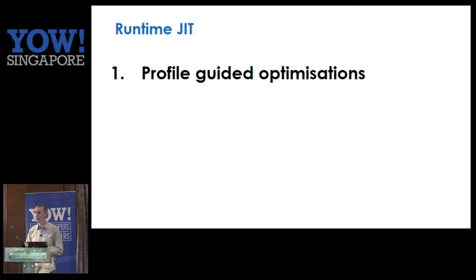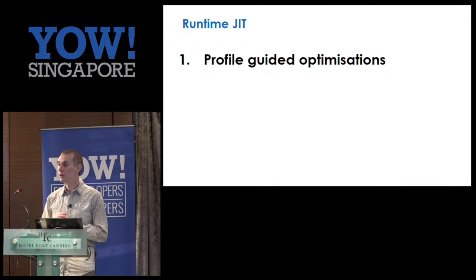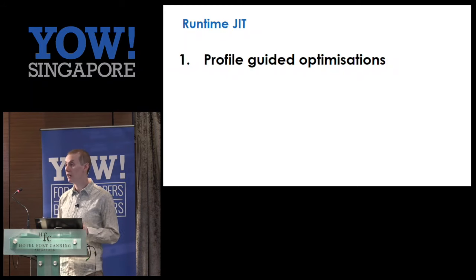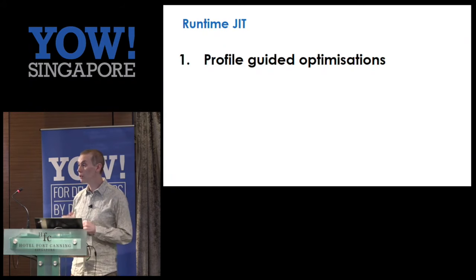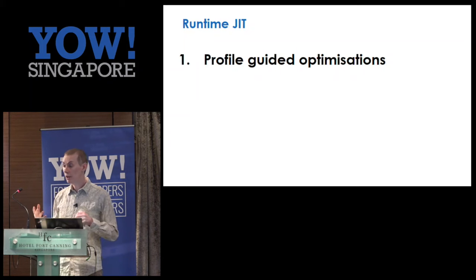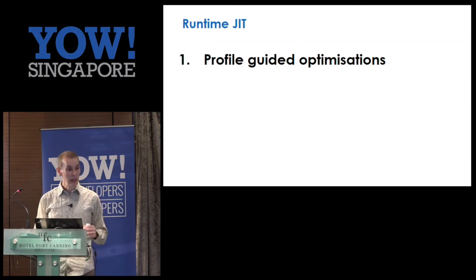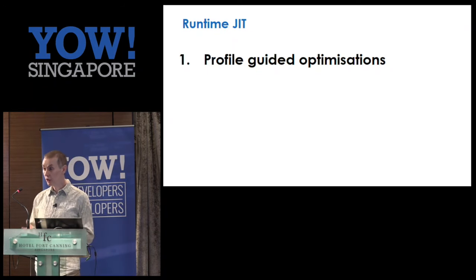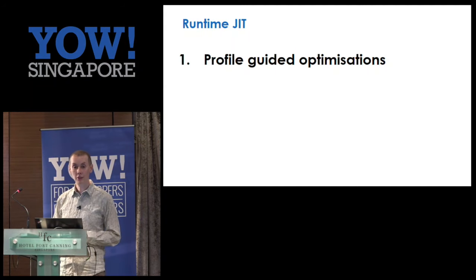A few things that are different about a managed runtime. One is that the runtime can make optimization decisions based upon data it's seen at runtime from your real application. A static compiler has to make all of its optimization decisions upfront without seeing your data. You can do a profile guided build with test data, then rerun the compiler — but that training data better be exactly like your runtime data, otherwise it will optimize wrongly. Very few people do it and do it well.